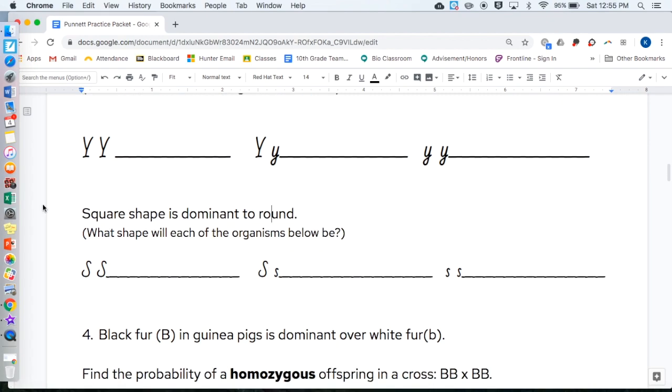Still with SpongeBob, square shape is dominant to round. Remember, SpongeBob's parents are round. They look like cookies. So, what shape will each of the organisms below be? Will capital S be square or round? Write it on the line. Capital S, lowercase s, and two lowercase s's. Write whether they are square or round on the line below.